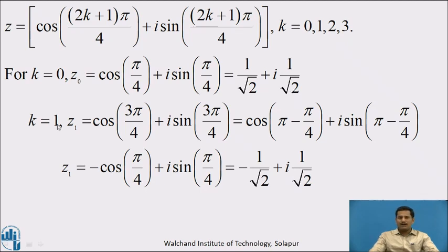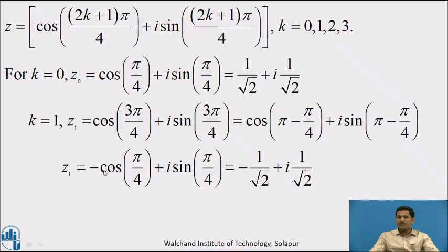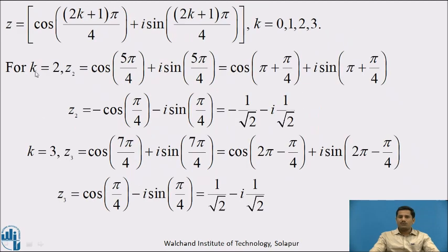For k = 1, z₁ = cos(3π/4) + i·sin(3π/4). Writing 3π/4 as π − π/4 and using cos(π − θ) = −cos(θ) and sin(π − θ) = sin(θ), we get z₁ = −cos(π/4) + i·sin(π/4) = −1/√2 + i·(1/√2).